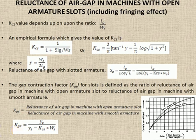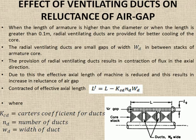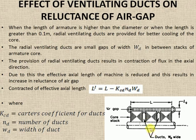So far we have studied the effect of slotting on the reluctance of air gap. Next we study the effect of ventilating ducts on the reluctance of air gap. For understanding this, we take the side cross-sectional view of the machine. Ventilating ducts are the small gaps in between the stacks of armature, provided for the purpose of ventilation or cooling.